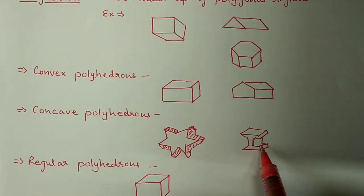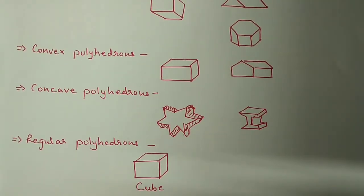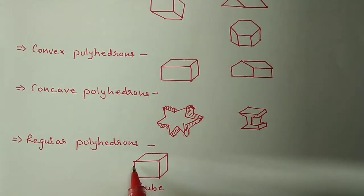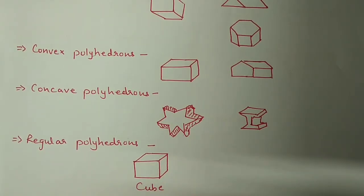Then we have regular polyhedron. Regular polyhedron means when each and every face of the polyhedron is congruent to each other. For example, if we are talking about a cube, all the sides are 4 - this is 4, this is 4, this is 4, all the 6 faces are the same. Such type of polyhedrons we will call regular polyhedrons.